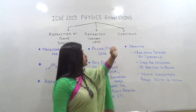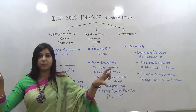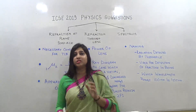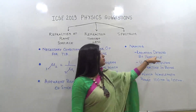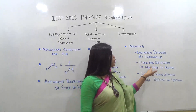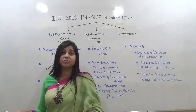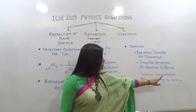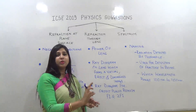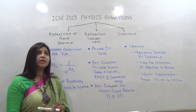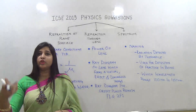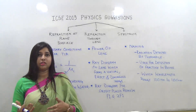Now let's move to the spectrum topic. From the electromagnetic spectrum, most questions will be naming questions — for example: radiations detected by thermopile (infrared radiations); radiations used for detection of fractures in bones (X-rays); radiations with wavelength range 100 nm to 400 nm (ultraviolet rays). They may also give a wavelength and ask you to name the ray and state its speed in vacuum.